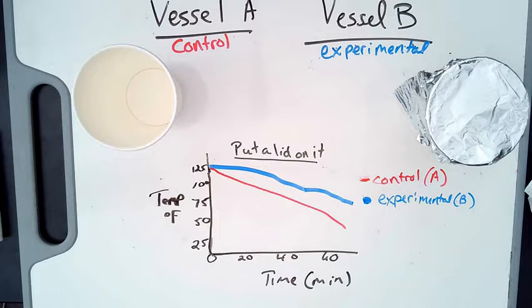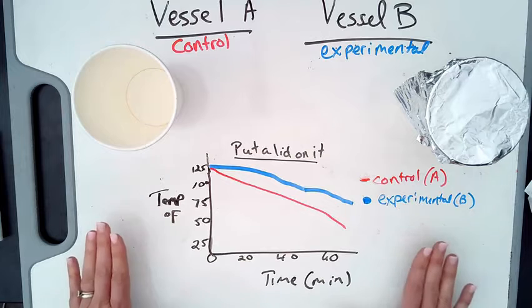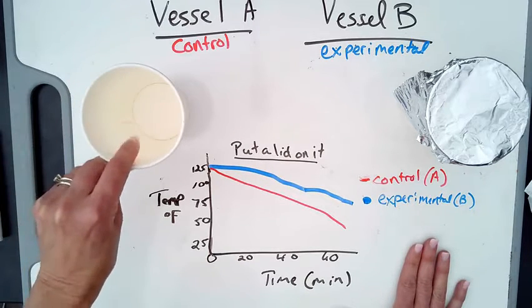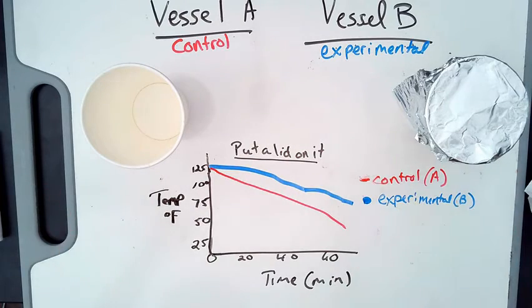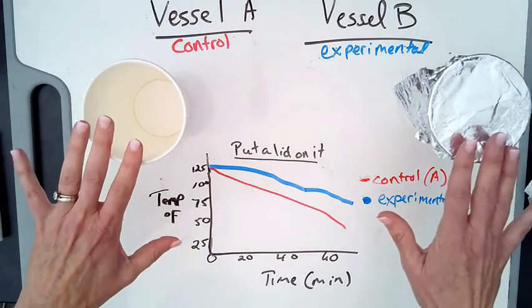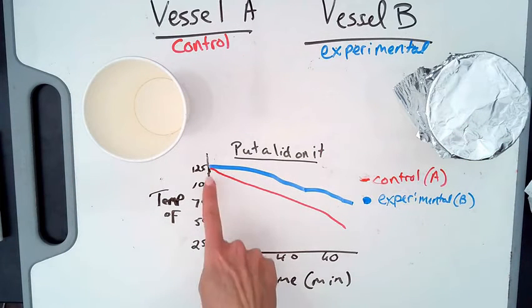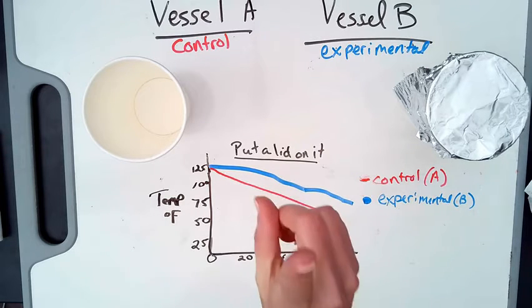You are going to build an experiment today based on the knowledge of the put a lid on it experiment. Quick recap: you had a vessel that was the same size and shape as another vessel, so two cups or two bowls. You put the same amount of water in each vessel, the same starting high temperature. As you can see, mine according to this graph started at around 125 degrees Fahrenheit.